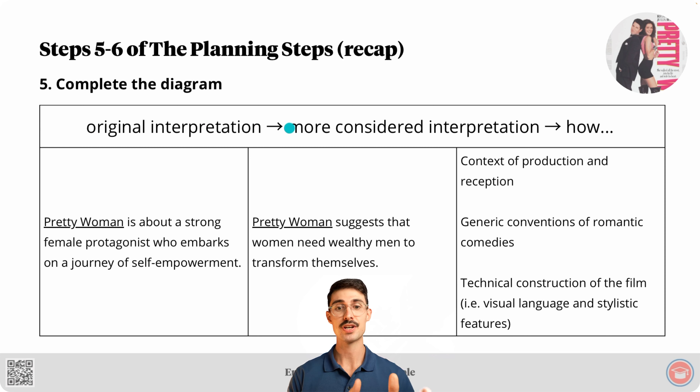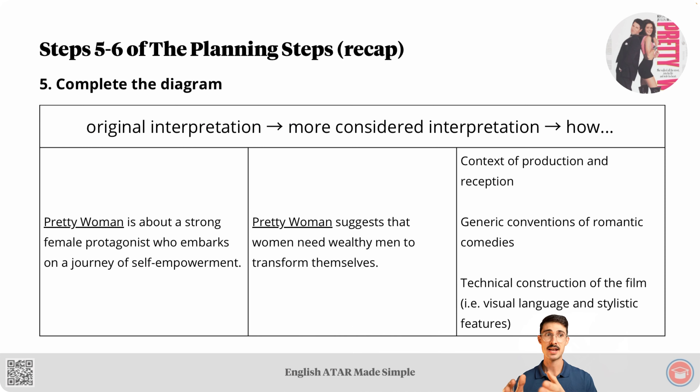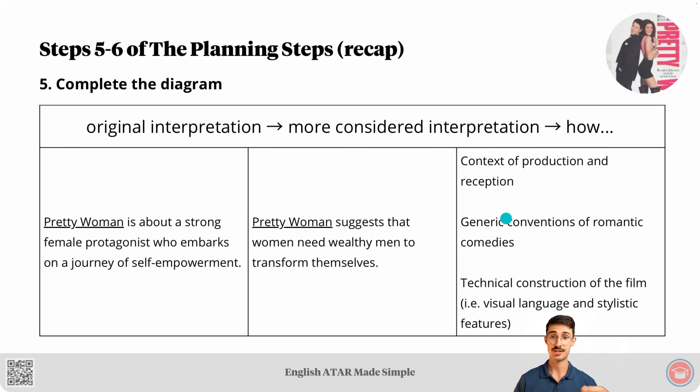This part of the question — the more considered interpretation part — then leads to the how: how reflecting on at least one different reading of the text helped me develop this more considered interpretation. In the lesson on your reading, interpretation, and response, we learned that the concept of a reading is influenced by nine different factors. Relevant for this question and this text, some of those factors are context of production, reception, generic conventions of rom-coms, and the technical construction of the film — specifically visual language features and stylistic features.